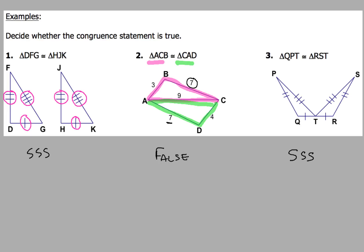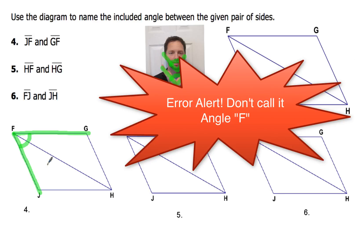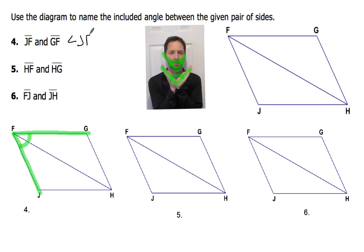Before example 4, remember we want to figure out what the included angle is — that angle right in between the two sides. In example 4, we have sides JF and GF. Looking at those two sides, the included angle is all of angle F. I can't just call it angle F though — I've got to call it angle JFG. I could also name it angle GFJ and that would be okay. Either way, just make sure you use three letters.